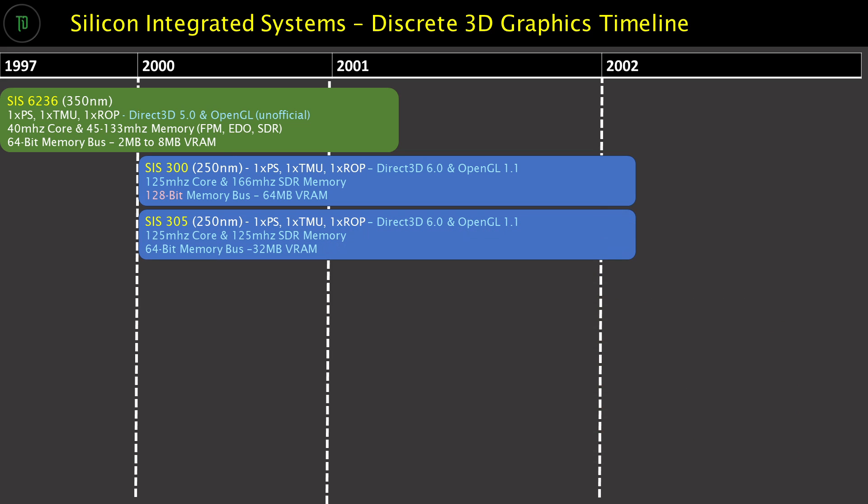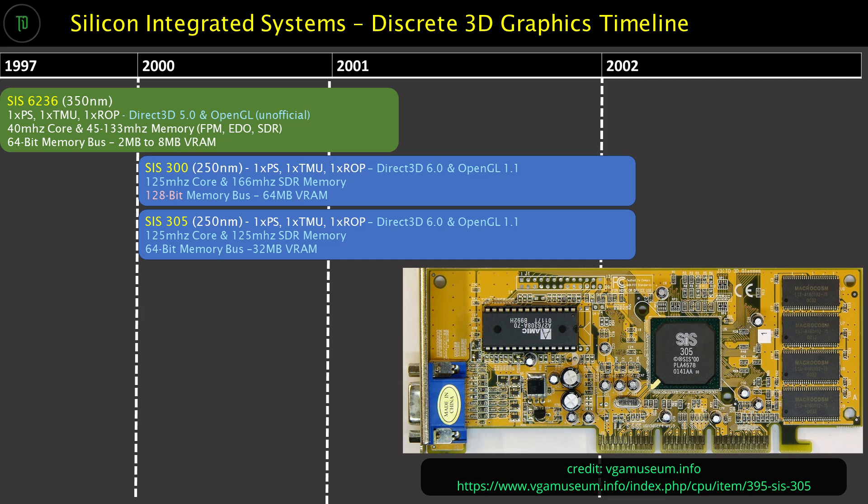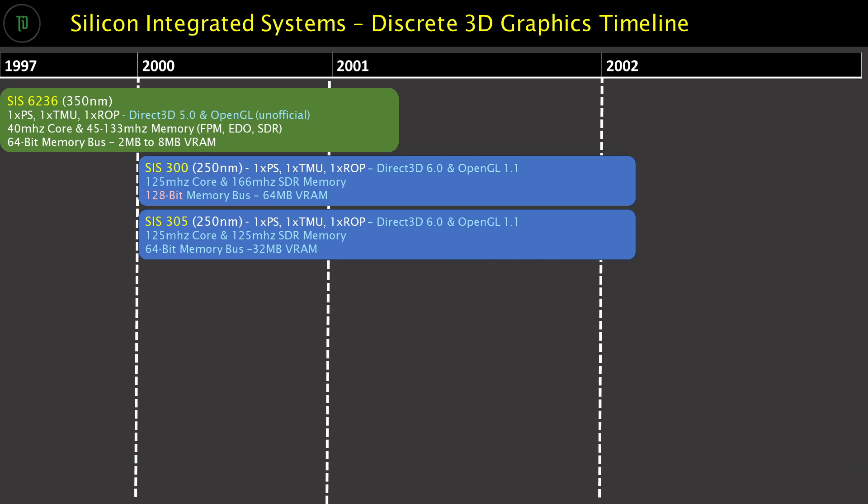At a similar time the 305 was released, which was effectively a 300 with a 64-bit memory bus and a lower memory clock. This ended up being the chip most consumers saw, as the 300 was scarcely found.